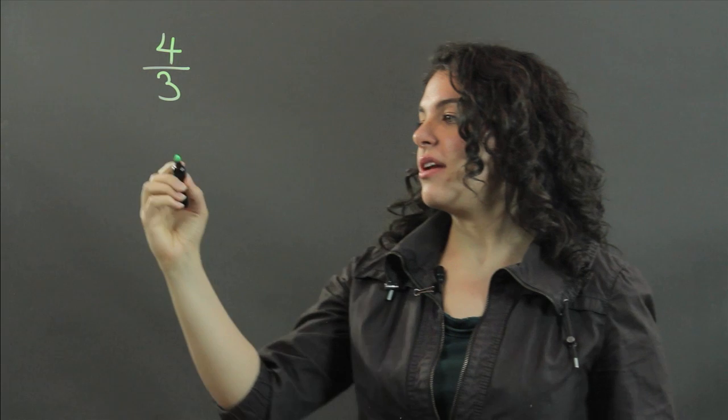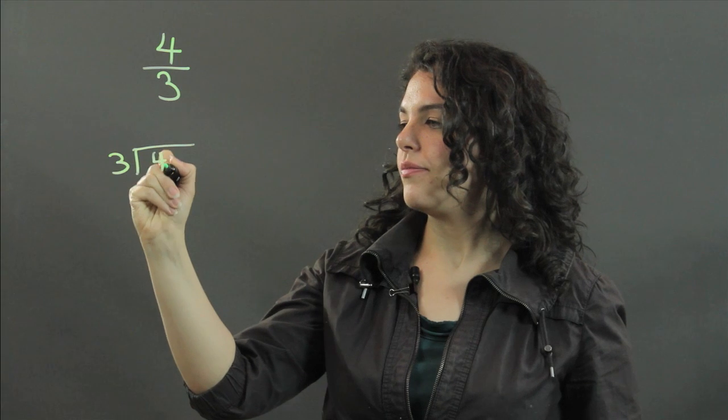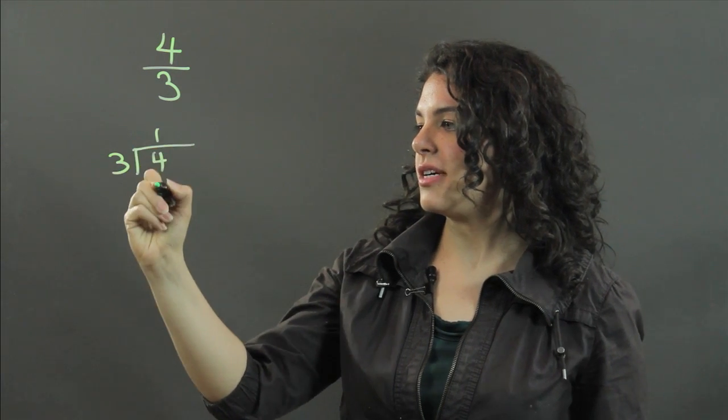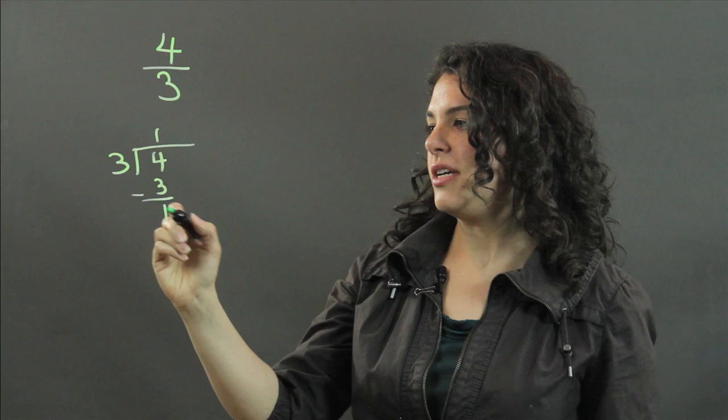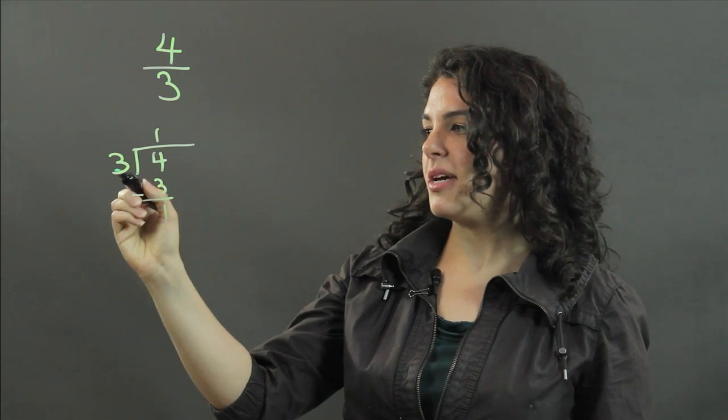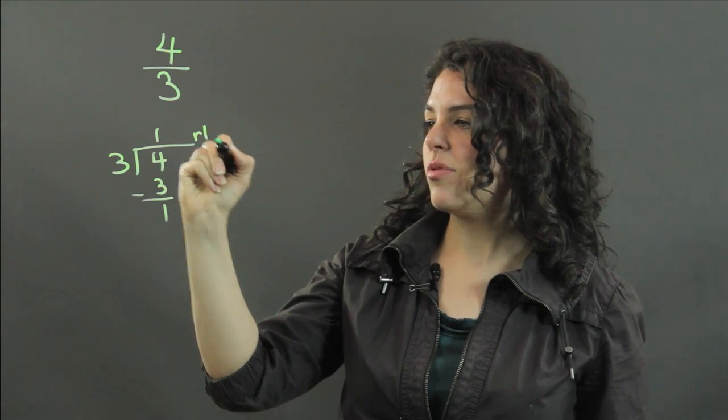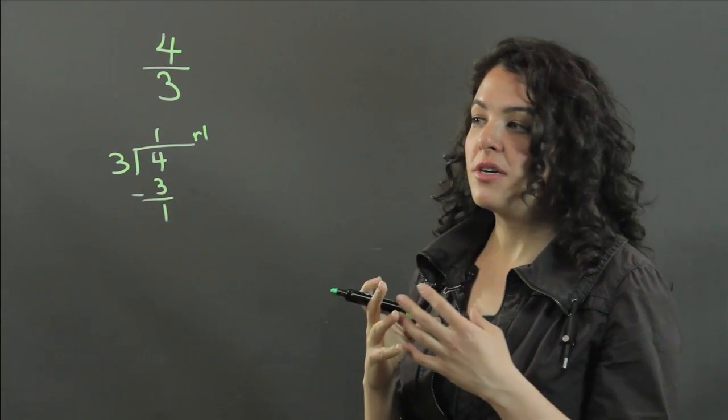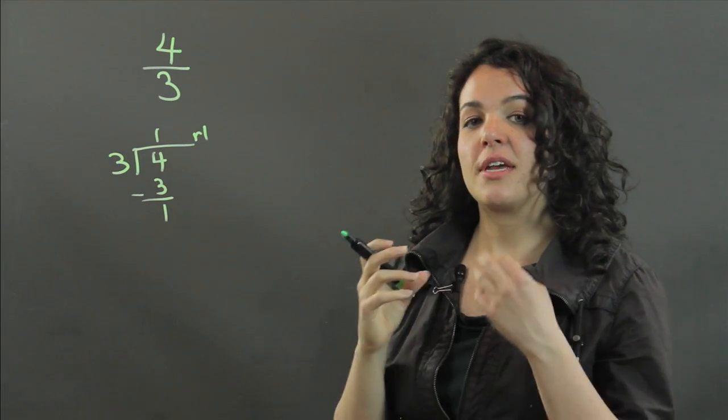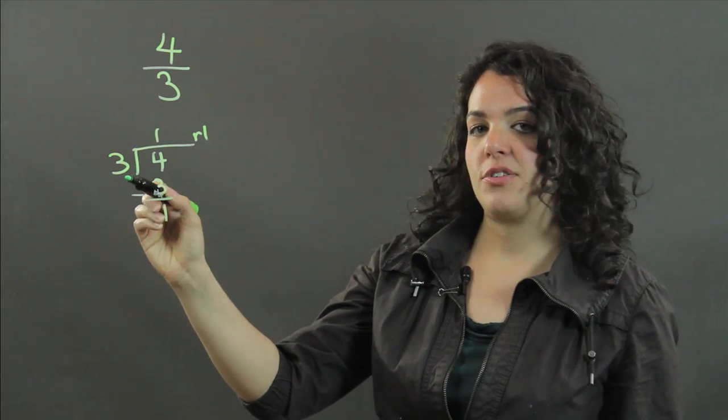So if we actually do that, if we actually divide 4 by 3, we know 3 goes into 4 one time, and we get a remainder of 1 here. So the answer, when we divide 4 by 3, we have 1 with a remainder of 1. And you might know that a remainder of 1 can be written as a fraction of the remainder with the divisor.